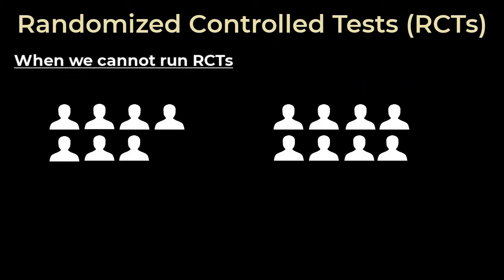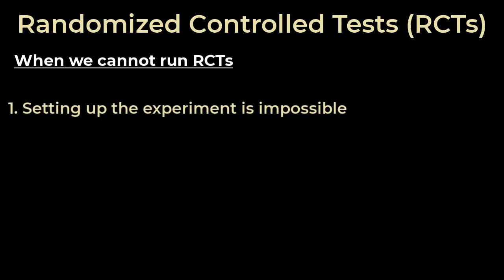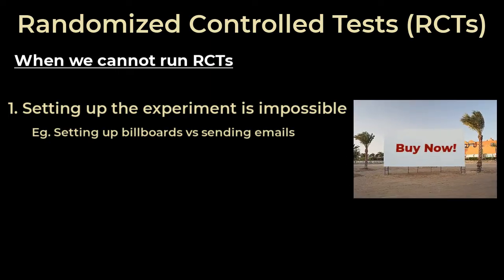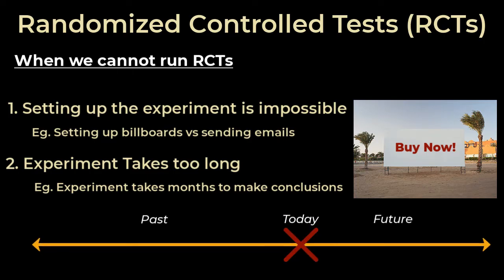But there are many situations where we just cannot run these randomized control tests. One is that setting up the experiment might be impossible. For example, instead of testing the efficacy of emails, what if I wanted to test the efficacy of billboard ads for my products? You can't just randomly go to cities and set up billboards just for the sake of a test. Another reason where we can't use RCTs is because the experiment takes too long, and so it makes sense to make inferences based on historically observed data — the data already exists and we don't need to wait for any experiment time.